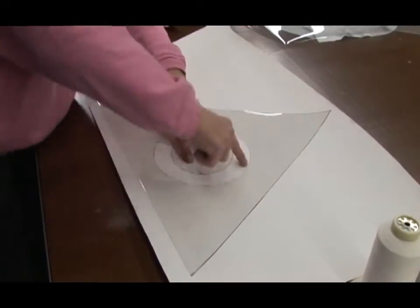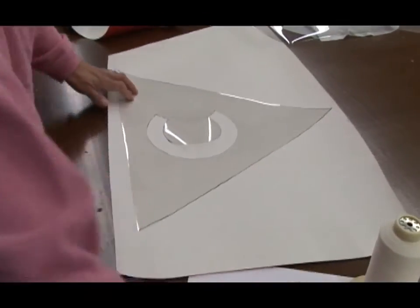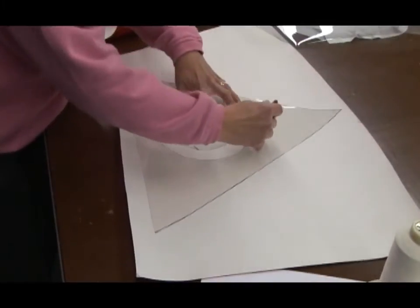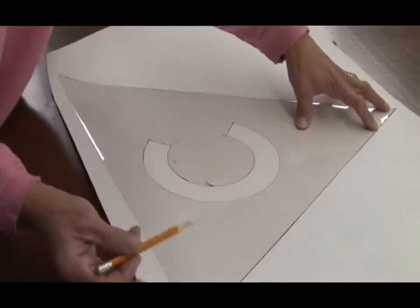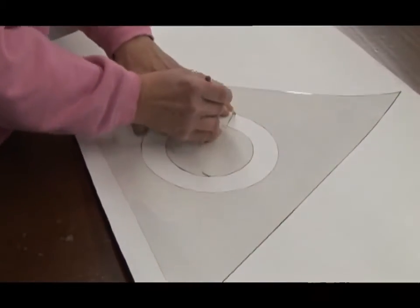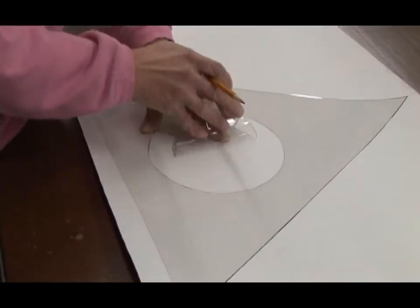So that when you cut it out and you flip it, you'll have the right letter facing the right direction. Just simply trace around everything that you've already drawn once you get your pattern cut out.